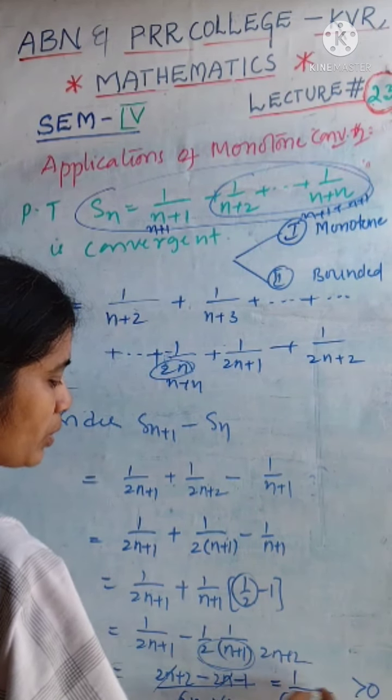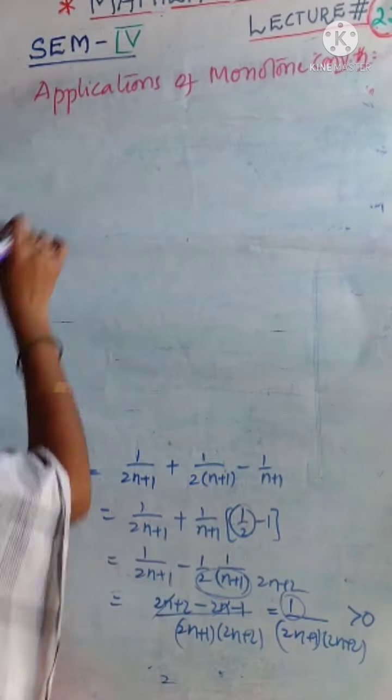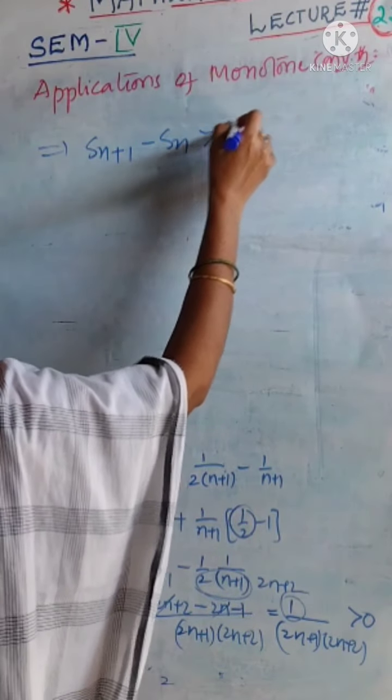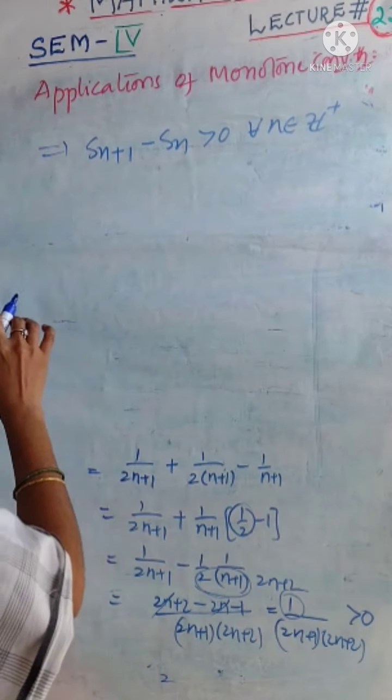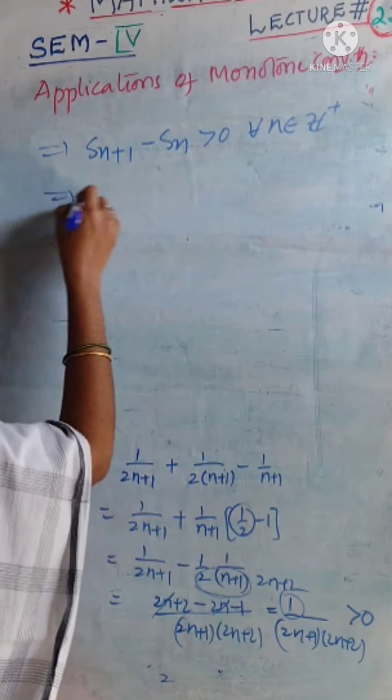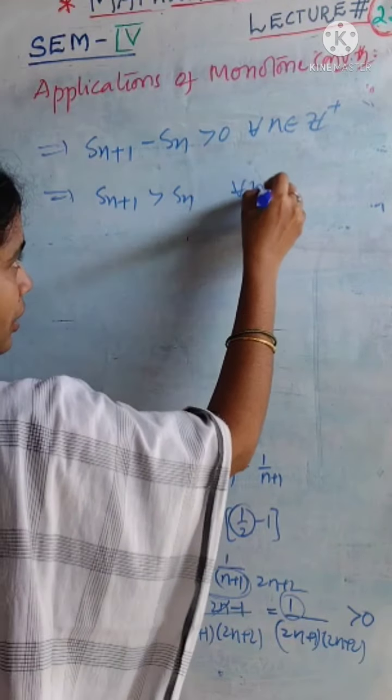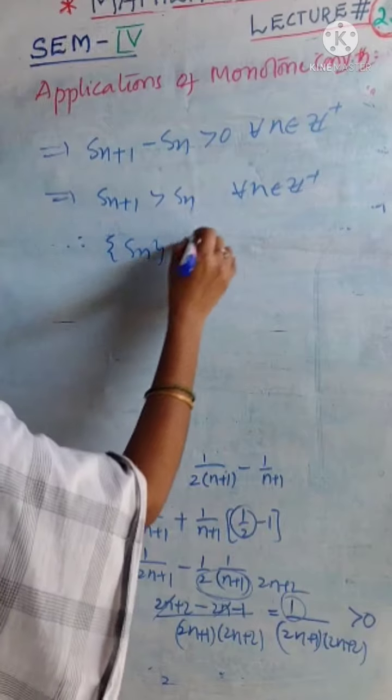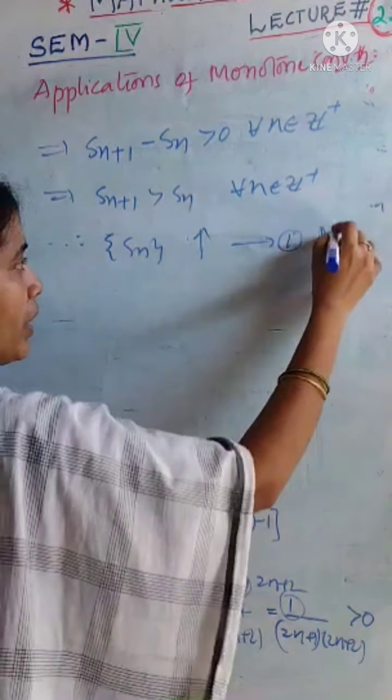Obviously, it is positive. That implies Sn plus 1 minus Sn value is positive. This being true for all positive integers, which means that bigger terms are bigger than smaller ones. This only happens whenever our sequence is increasing. That means it is a monotone sequence.